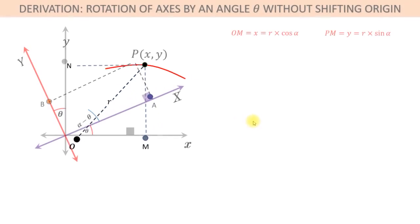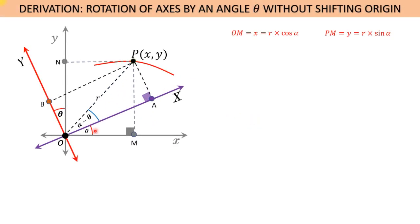When axes are rotated through an angle theta in the anti-clockwise direction, the distance of point P from the origin will not change — it will remain r — whereas the position vector will now make an angle alpha minus theta with the positive x-axis. Suppose capital X, capital Y is the new coordinate of point P.